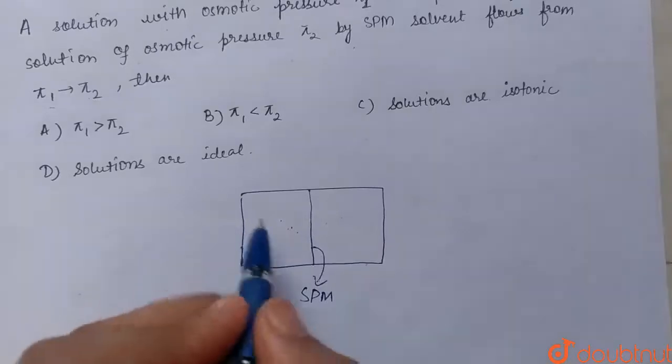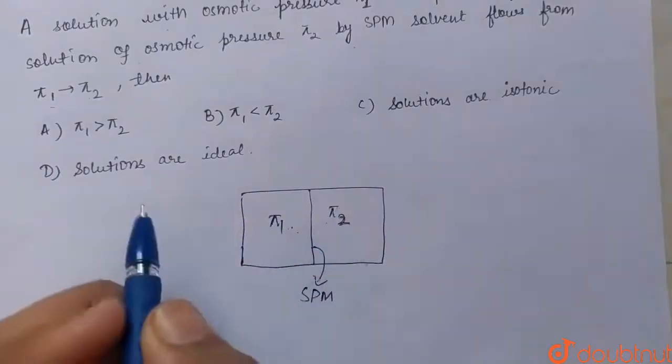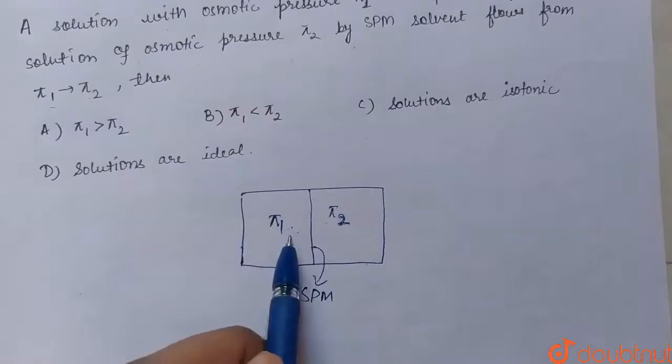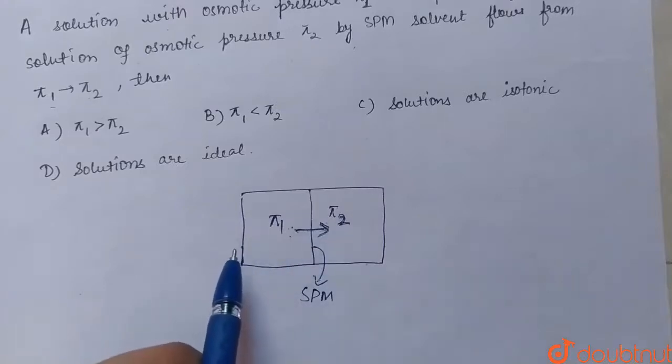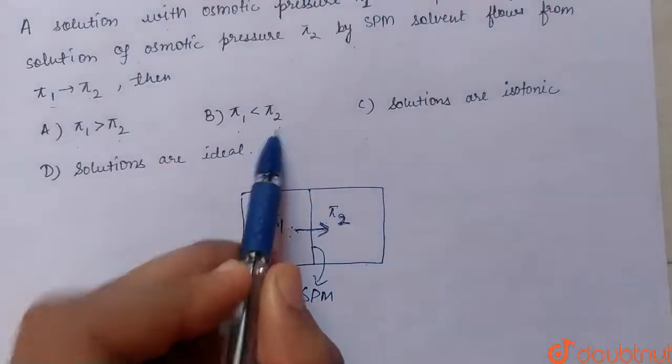One has pressure π1 and another has pressure π2. Now it is seen that in this experiment, the solvent is flowing from π1 to π2, in this direction. We have to determine whether π1 is greater than π2, or π1 is less than π2, or solutions are isotonic, or solutions are ideal.